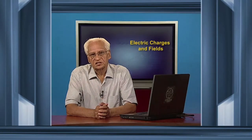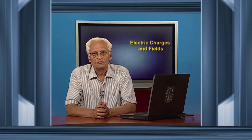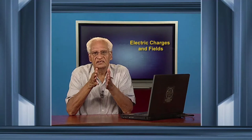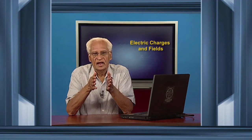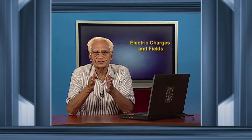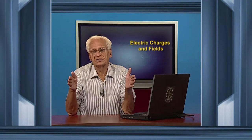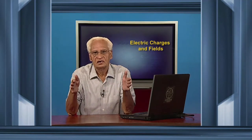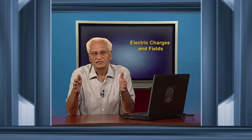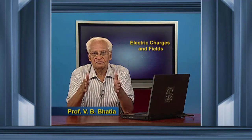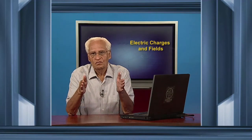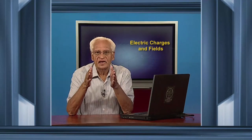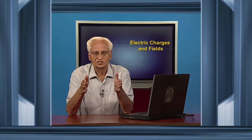In the last lecture, we learnt that metals have free electrons and these free electrons can move in response to an electric field. However, we also learnt that the drift speed of these electrons is very small. So, how is it that a meaningful current gets established?